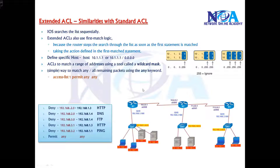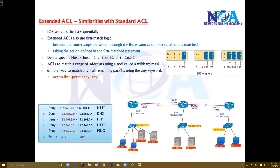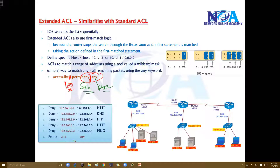If you want to permit all traffic or match all traffic, we say 'permit any any'. The access list number will be 100, not 1. So we say 'access-list 100 permit any any' — the first 'any' matches the source and the second 'any' matches the destination. We need to write two 'any' statements: one for source and one for destination.